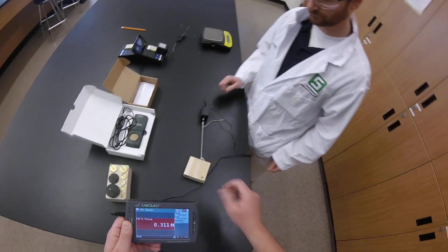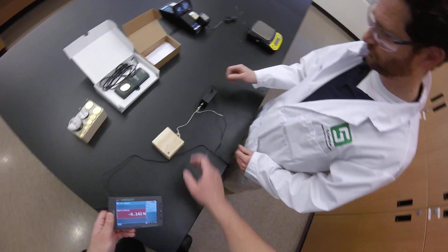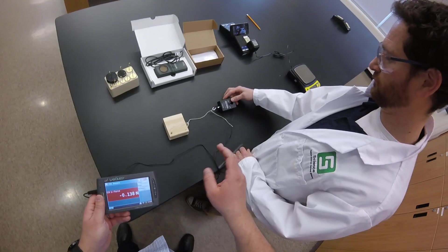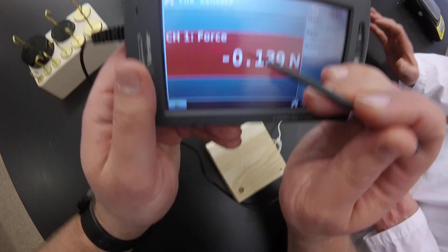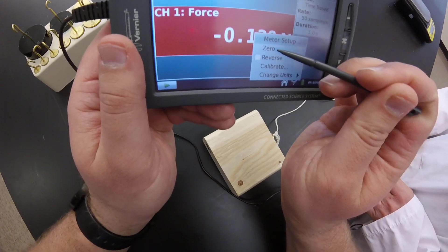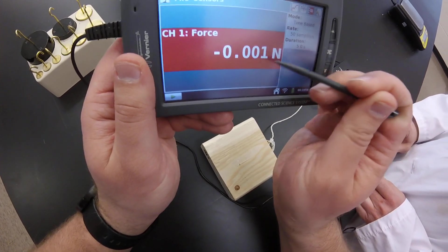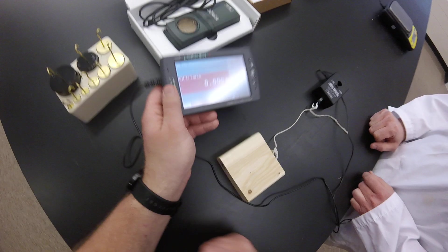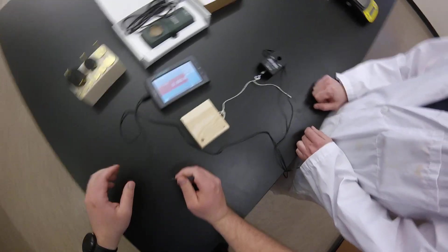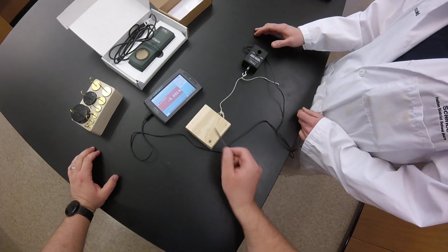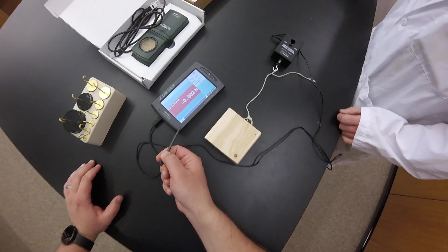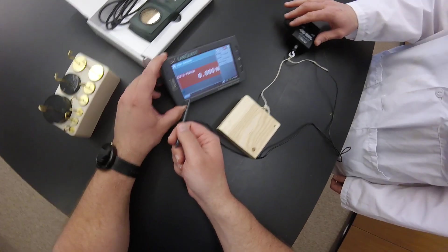And we're going to make sure that we zero our force sensor first. So you can see that Mr. Torcoletti has it here horizontally. We're just going to click on the force box and click zero. And you can see we're basically zeroed off now and ready to take some data. So I'm going to hit play and Mr. Torcoletti is going to have about five seconds to pull on this block.